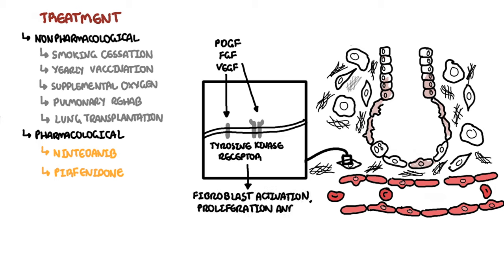In summary, idiopathic pulmonary fibrosis is a chronic and progressive lung disease characterized by inspiratory velcro-like crackles and clubbing, with a median survival of up to 5 years. It has lower lobe predominance and is typically diagnosed — gold standard — with a high-resolution CT chest, which shows reticular changes, honeycombing, and traction bronchiectasis.